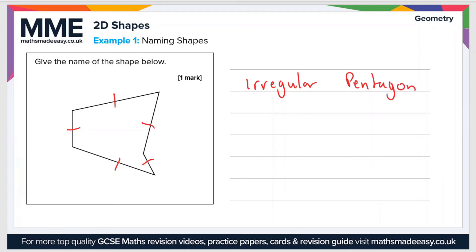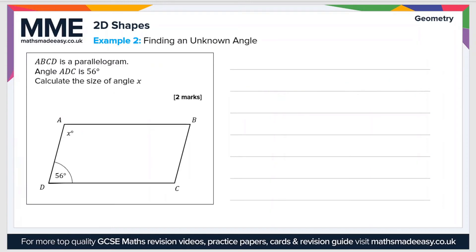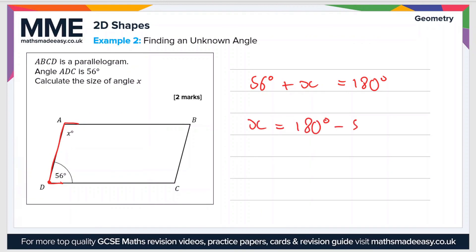That's all we need for one mark. Moving on to the second example: ABCD is a parallelogram. Angle ADC is 56 degrees — calculate the size of angle x. Using the features of a parallelogram, we know that 56 degrees plus x equals 180 degrees, because adjacent angles in a parallelogram add up to 180 degrees. So x equals 180 minus 56, which equals 124 degrees.